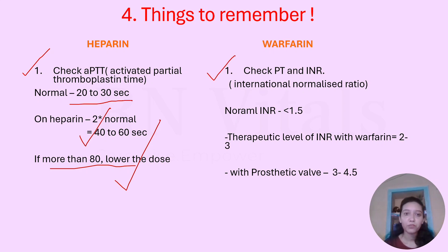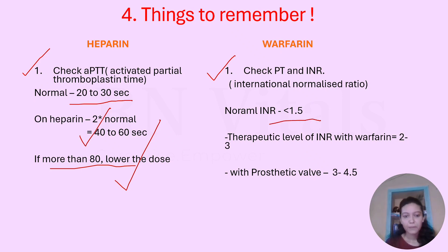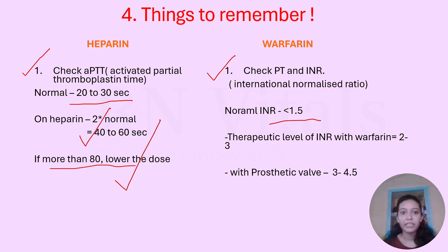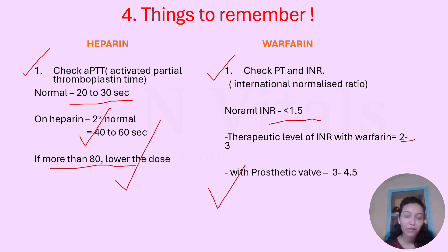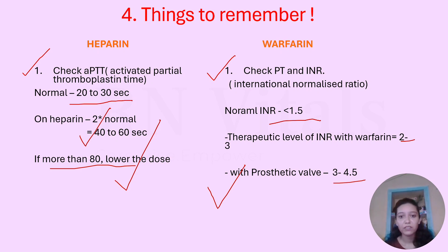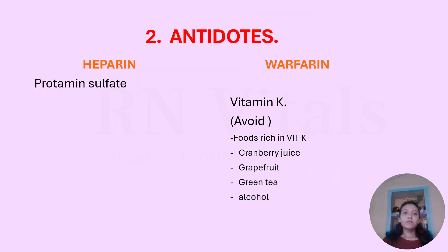For warfarin, we check PT (prothrombin time) and INR (international normalized ratio). The normal INR is less than 1.5, but the therapeutic INR for a patient on warfarin should be between 2 and 3. Importantly, if the patient has had a valve transplant with a prosthetic valve, they are at high risk of clotting, so we give a higher warfarin dose — the INR in that case should be around 3 to 4.5. If it goes higher, lower the dose.